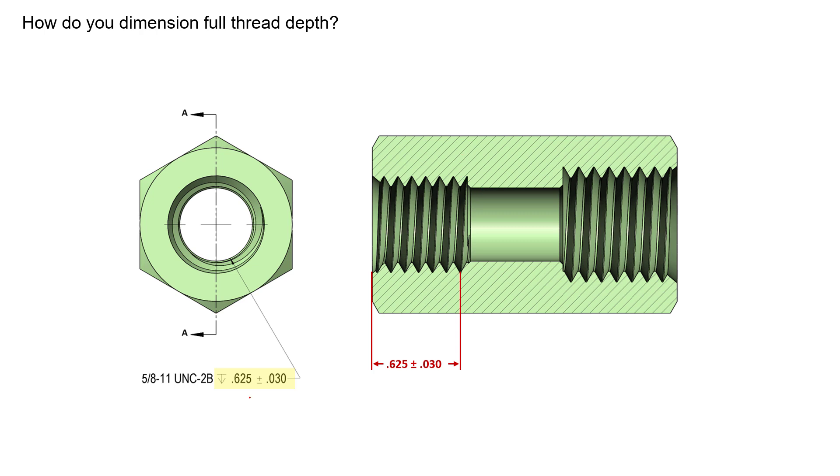So really what we're trying to say here is this dimension and its tolerance is trying to control the location or the depth of the last usable thread. This last full thread, the last thread that has a hundred percent depth and full form, is the point where we're going to take the location from, and that location has to be 0.625 plus or minus 30 thousandths from the surface that that thread originates from.